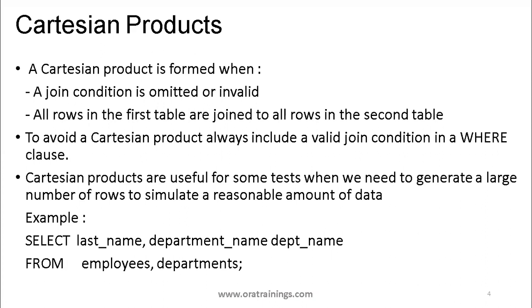Coming to the first join: the cartesian product, also called cartesian join or cross join. Whenever you're joining tables but don't mention any condition, that becomes a cartesian join. This join generally should not be used because your data will be a very large result set. If table one has 1 lakh records and table two has 2 lakh records, for each record in table one you'll see 2 lakh records — so the total rows equal the number of rows of the first table multiplied by the number of rows of the second table.